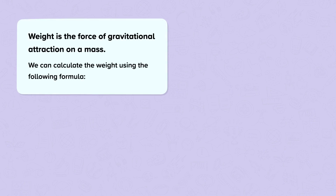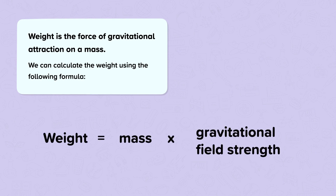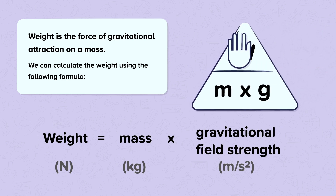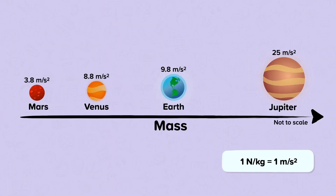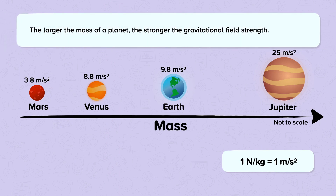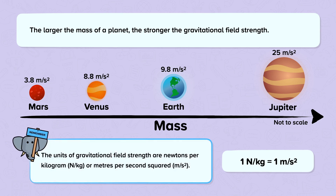Weight is the force of gravitational attraction on a mass. We can calculate the weight using the following formula: weight is equal to mass times gravitational field strength. The units of weight are newtons, mass is kilograms, and gravitational field strength is newtons per kilogram or meters per second squared. Every object that has mass has a gravitational field strength. The larger the mass of a planet, the stronger the gravitational field strength. You will be given the gravitational field strength in each question to use.